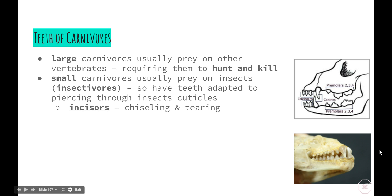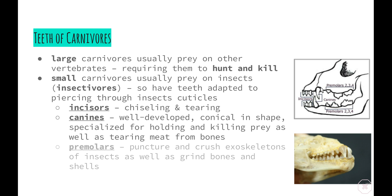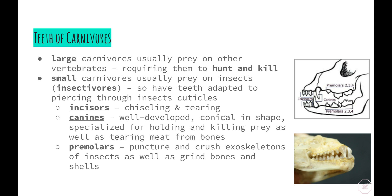As we can see, the incisors of carnivores are extremely prominent and quite jagged, helping to chisel and tear away flesh from bone. The canines are quite pronounced — conical in shape and specialised for holding and killing prey, puncturing the flesh and doing the most damage. The premolars are all different in shape and quite jagged as well, used to puncture and crush the exoskeletons of insects as well as grind down the bones and shells of large animals.